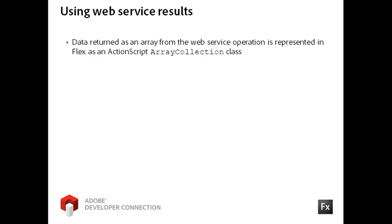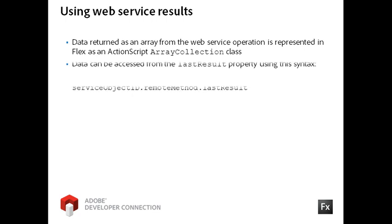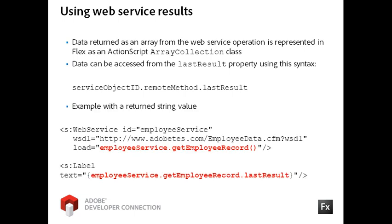Like the HTTP service object, if the data is returned as an array of objects, then Flex will convert it to an instance of the ArrayCollection class. Also like the HTTP service object, you can directly access the data through the LastResult property. The syntax for Web Services, however, uses dot syntax starting with the service object's ID property, then you reference the remote method name, then the LastResult property itself. Here is an example of this code if the service call returned a simple string.